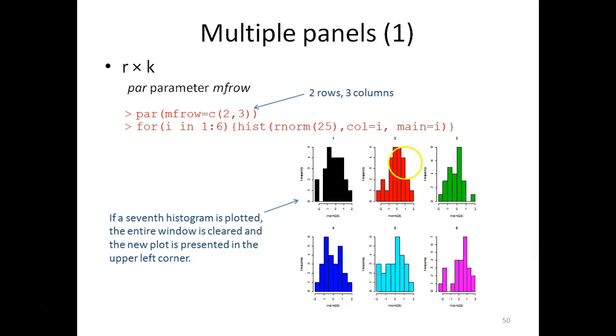As you can see, the histograms are rather narrow because regardless of the number of rows and columns you define, they always end up in the same square window, seven by seven inches, unless you define otherwise, and I'll show you how that's done later.